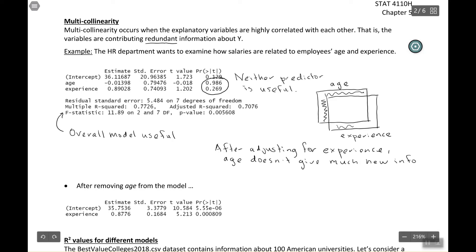And the same sort of thing happens here for experience. This one ends up being a little bit bigger, but it's the same idea. So after adjusting for age, so assuming that age were already in the model, experience doesn't give much new information.